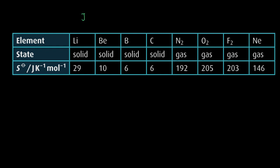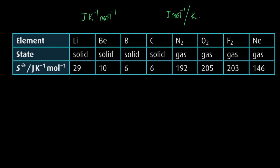We'll discuss the math for entropy units later. But for now, think of it as joules per mole per Kelvin — which is basically like kilojoules per mole but a smaller value. These are some of the values for individual entropies. Importantly, every element or compound has its own entropy value.